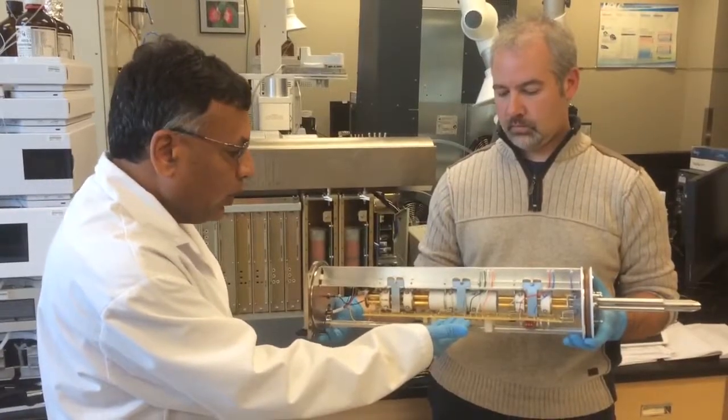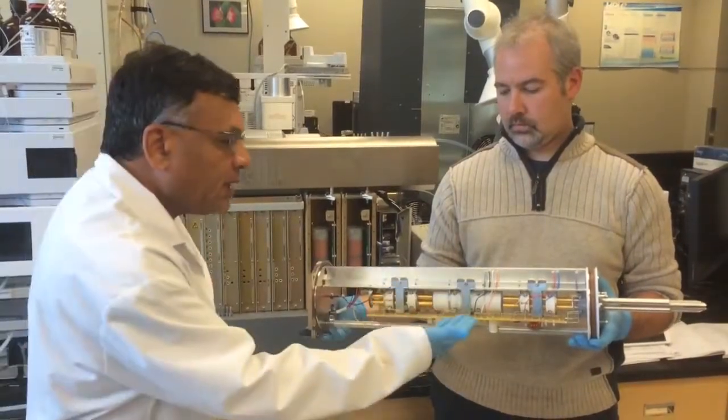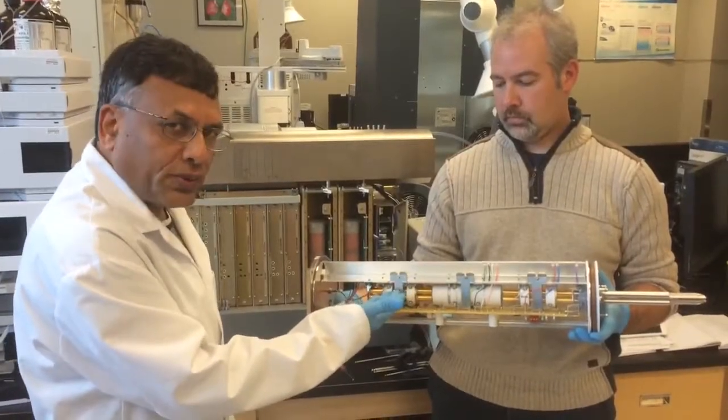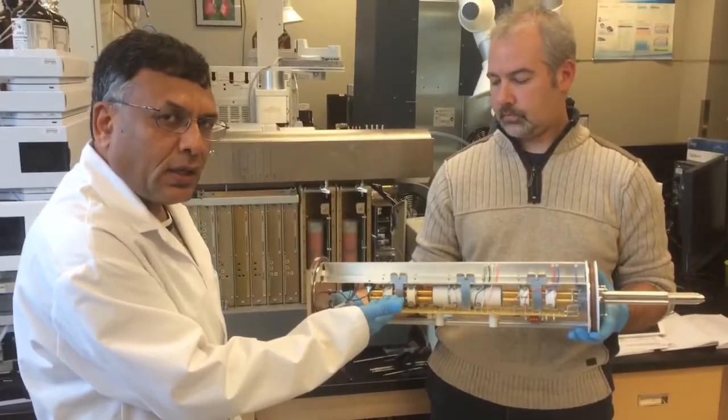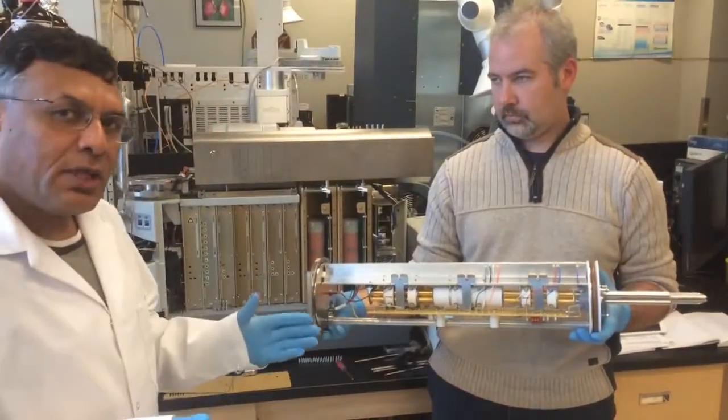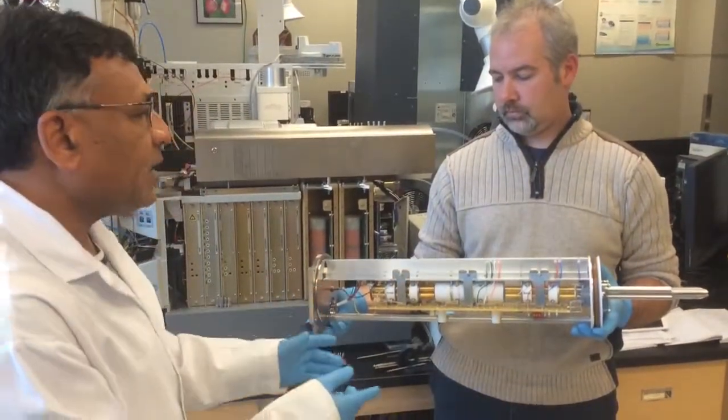Stage two is called quadrupole two. The fragments and their products go into quadrupole three, which is the third stage of the triple quadrupole mass spectrometer. In MS MS mode, all the ions from stage one get fragmented in stage two and are transmitted through stage three.